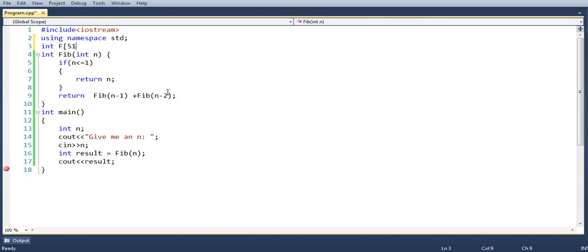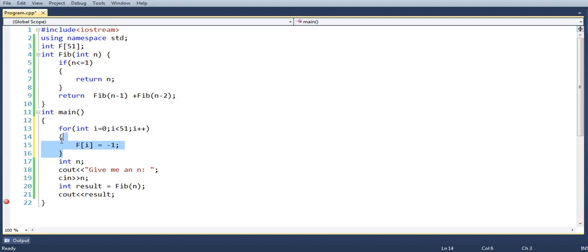So what I'll do is I'll first declare an array f of size 51. And we will come back to why we have chosen the size 51 only. In the main method, we go ahead and say that for all i from 0 to 50, set f[i] is equal to minus one. So if f[i] is minus one, we can say that f[i] is not calculated yet.